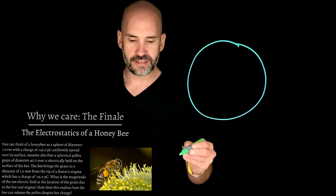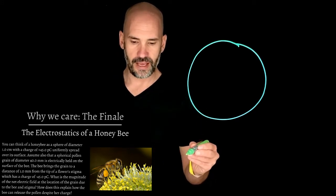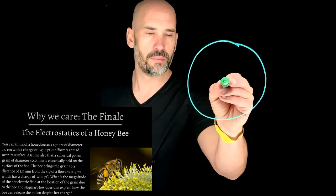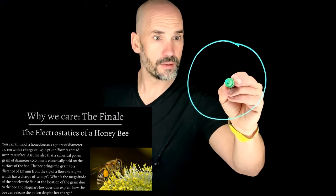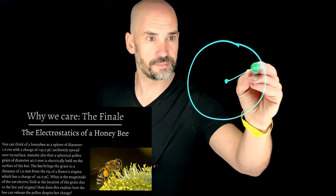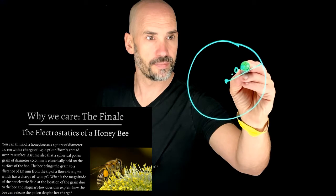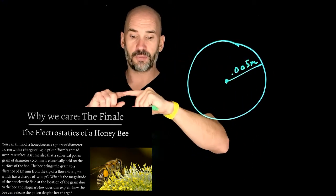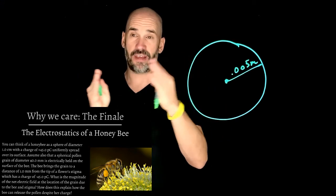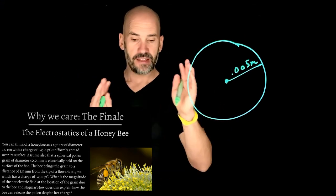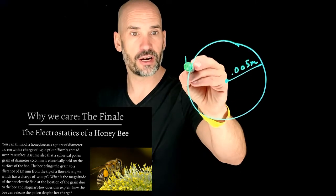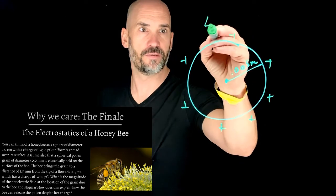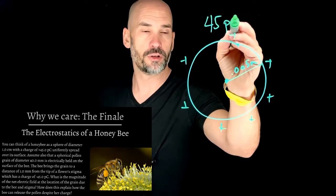So this is going to be a one centimeter diameter. So that's going to be 0.005 meters. Okay, so one centimeter diameter is 0.01 meters, but half that is 0.005, right? And so this has a uniform charge, positive charge on the outside. So the honeybee has a charge to it.